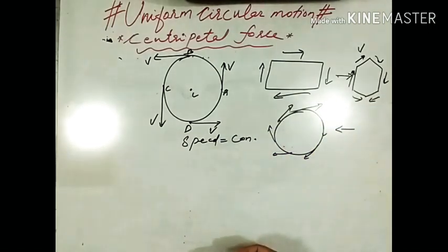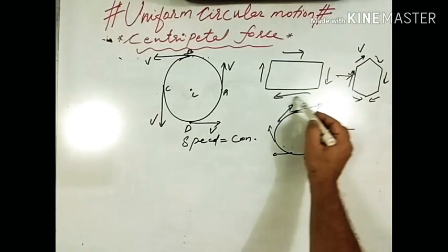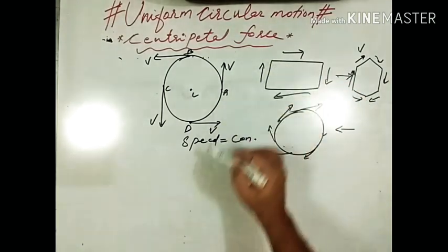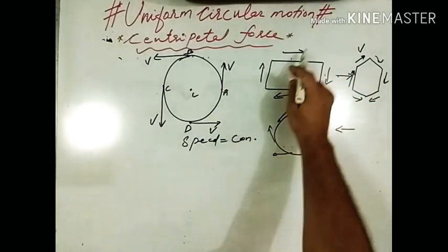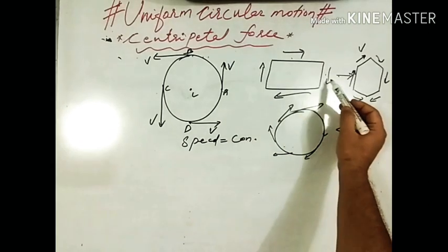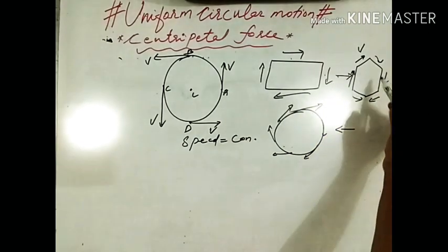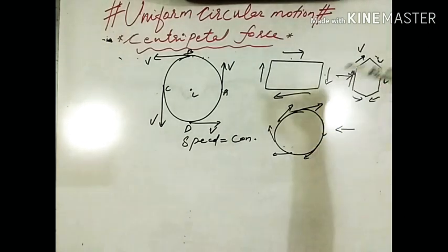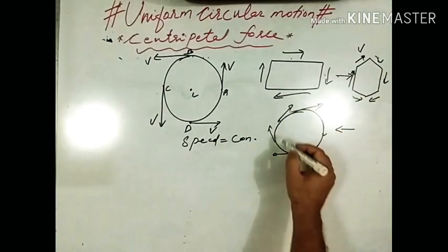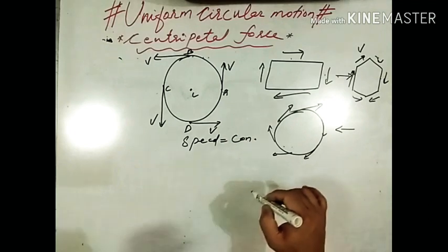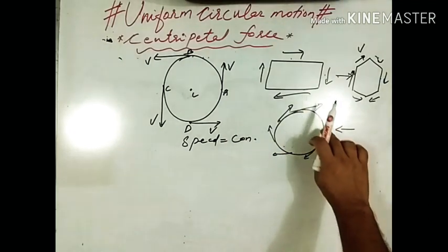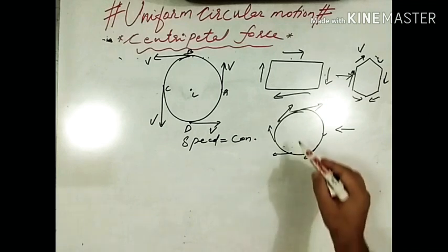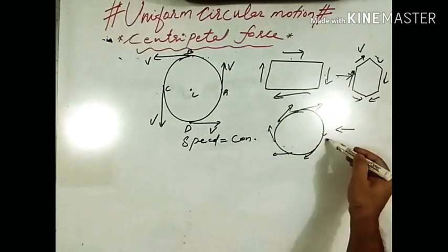Consider one more example. An athlete running around a rectangular track has to change direction at each corner — four times. If we increase the number of sides progressively, it forms a hexagon, requiring six direction changes, and gradually it becomes a polygon and ultimately a circle. This means that if the athlete wants to remain on the circular track, he must change his direction of motion at every point.